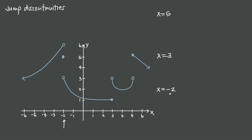So at x equals negative 2, let's take a look at the left-hand limit, the right-hand limit, and the value of the function. The left-hand limit is the limit as we approach from the left-hand or negative side. Coming in from the left, what y-value are we approaching? This spot right here traces over to the y-axis at y equals 6, which means our left-hand limit is going to be 6.